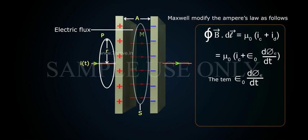The term ε₀ times derivative of φₑ by dt is called the displacement current Iₐ. Therefore, Iₐ equals ε₀ times derivative of φₑ by dt.